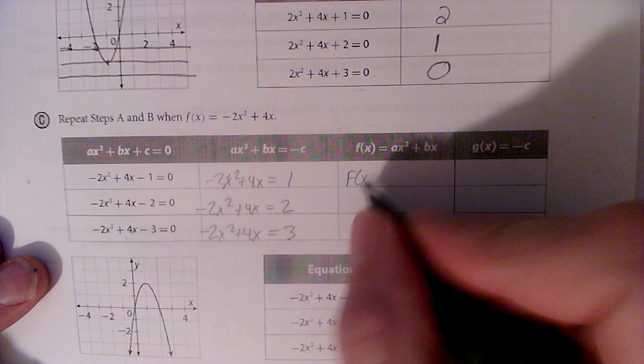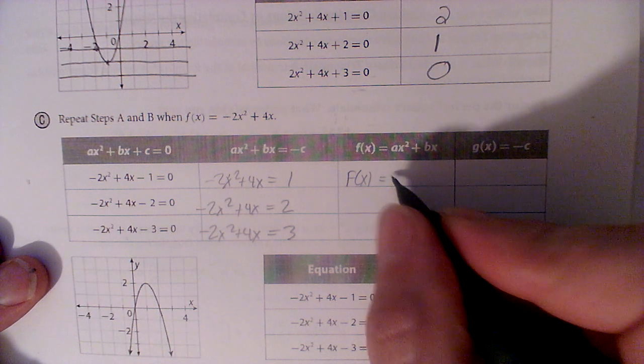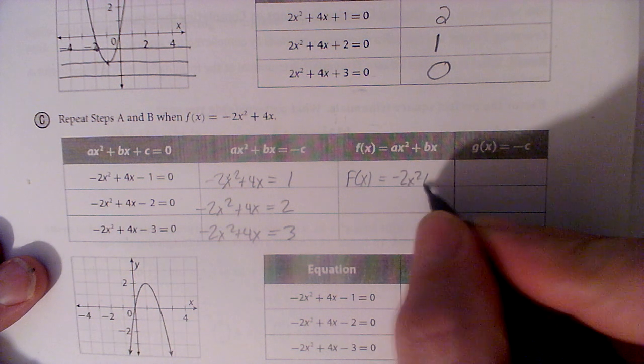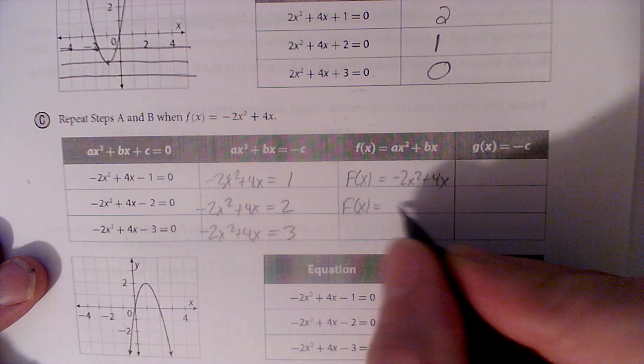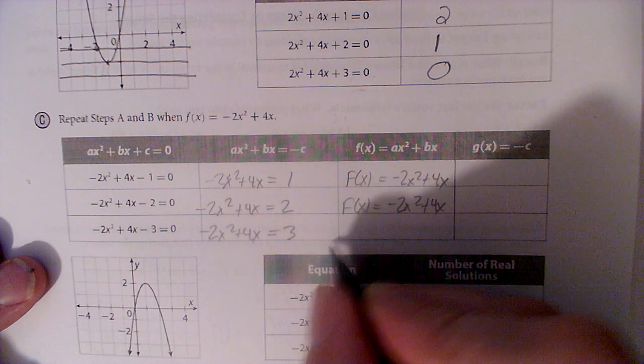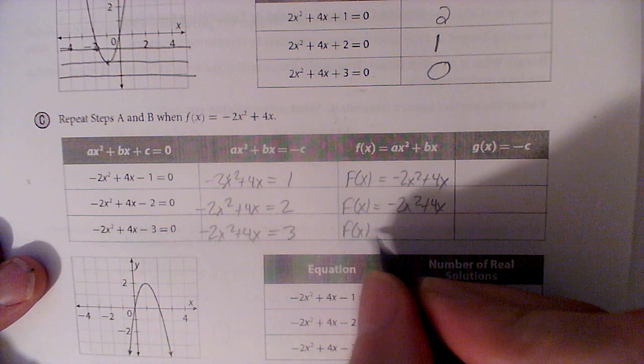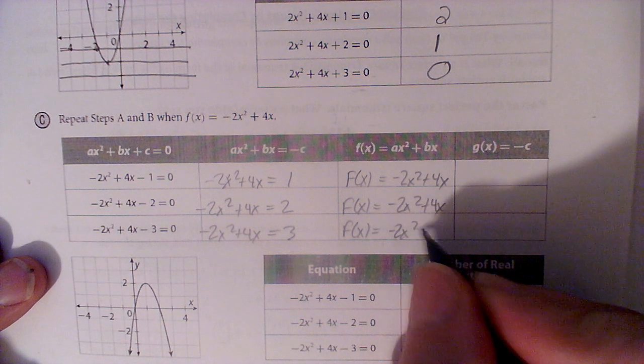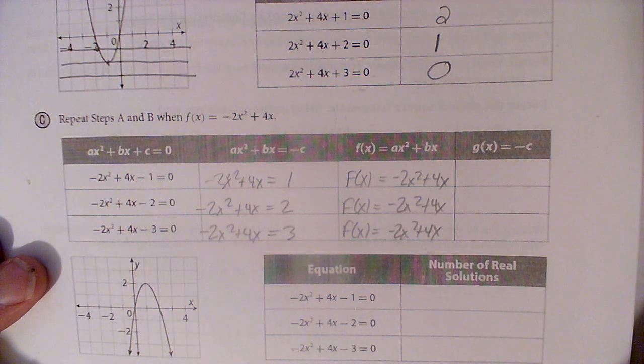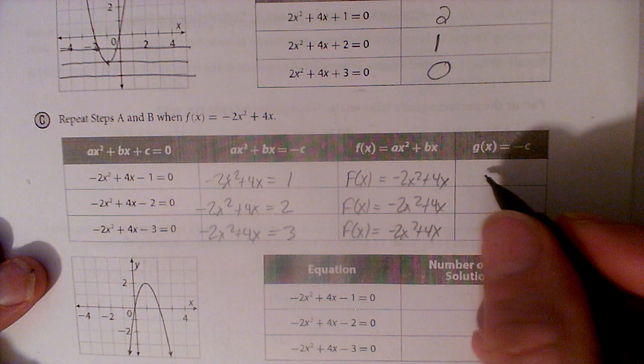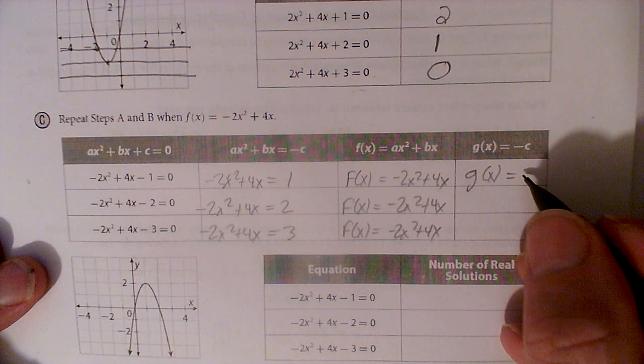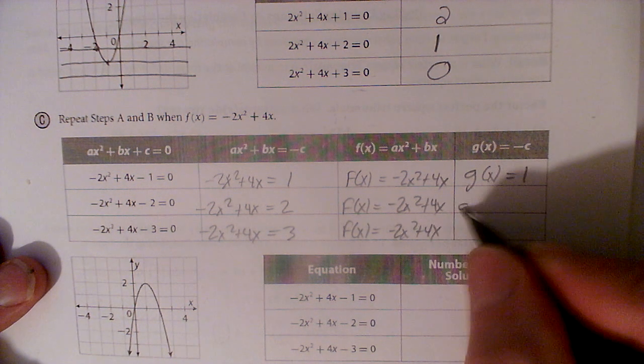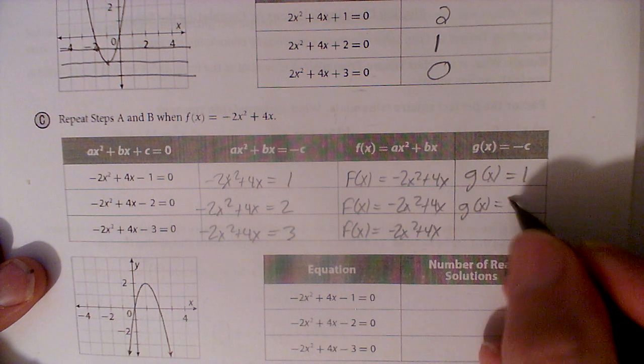So my f of x is going to be the left side. So negative 2x squared plus 4x all the way down. We're just going to keep writing that negative 2x squared plus 4x. But now my c is going to be positive instead of negative. So the equations are a little bit different.